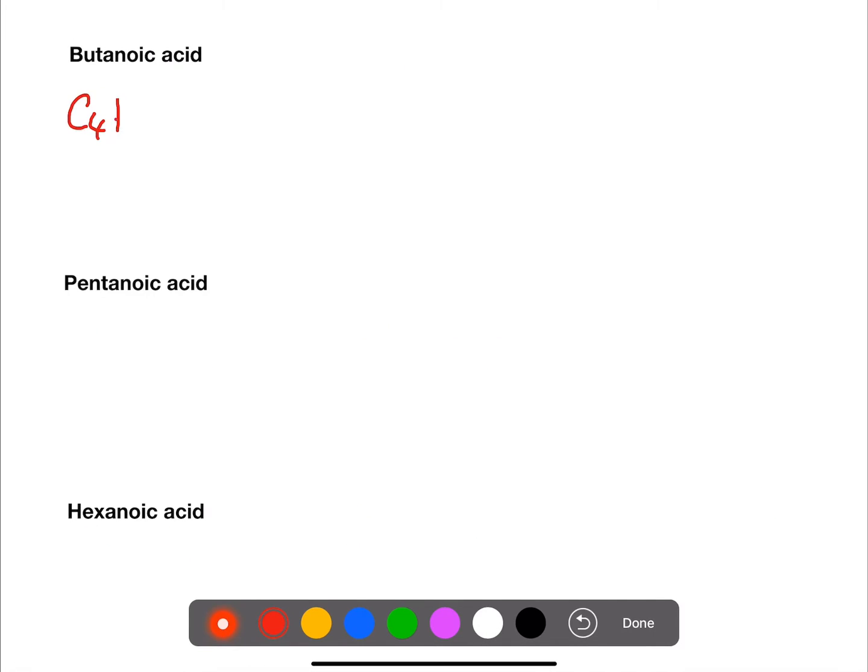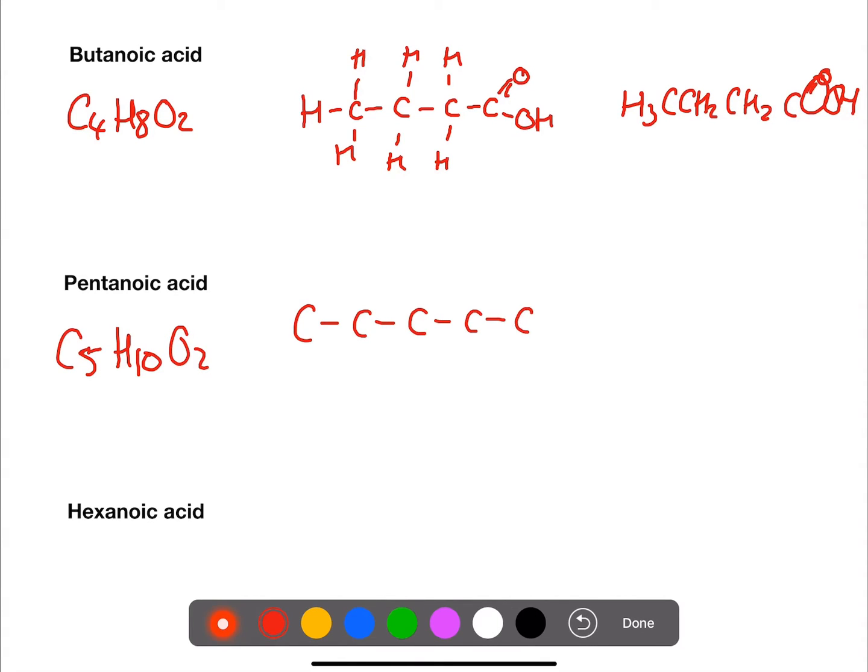Butanoic acid has four. So one mistake that people often make is to not count the carbon which has the functional group on it. So be careful when you are naming or drawing carboxylic acids. Care also needs to be taken with the number of bonds on the carbons, making sure you don't accidentally add an extra H onto that carbon which has the carboxyl functional group.